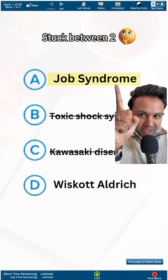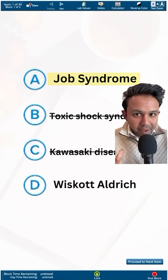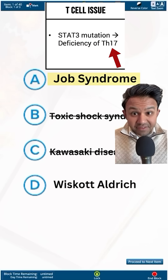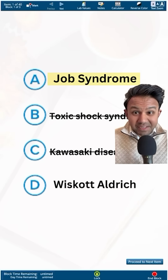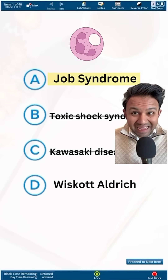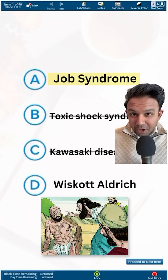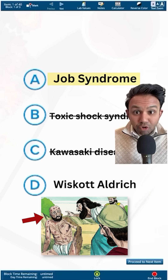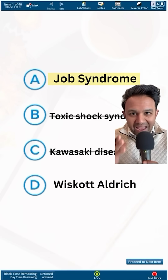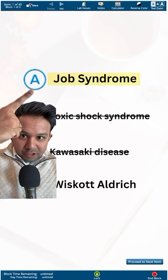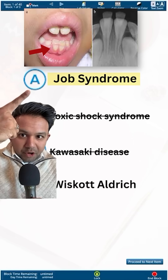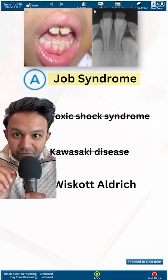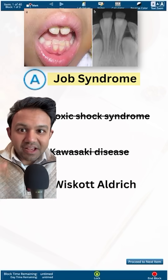Job syndrome is an autosomal dominant disease in which you have defective T helper 17 cells. This means neutrophils can't get to the site of infections. It's a biblical tie-in because patients with Job syndrome present with recurrent cold abscesses. They also have retained primary teeth, so your exam questions may give you a picture of two sets of teeth.